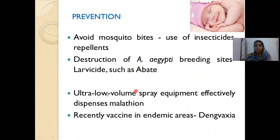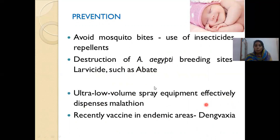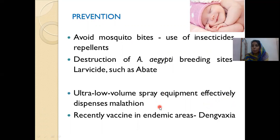For prevention: always avoid mosquito bites, use insecticides or repellents, destroy breeding sites, go for ultra-low-volume spray for larvae. Recently, a dengue vaccine has been licensed and used in around 14 endemic countries, though not yet in India. This concludes the discussion on dengue and its management using a case-based approach. I hope the session was useful. Thank you so much.